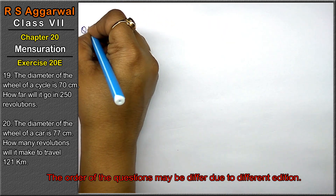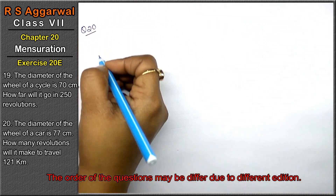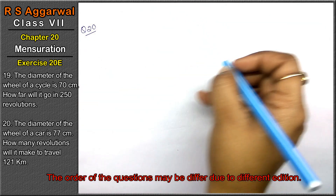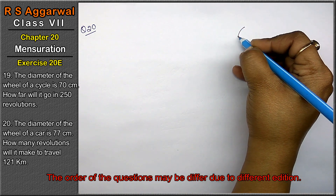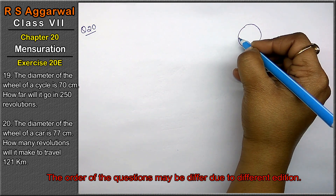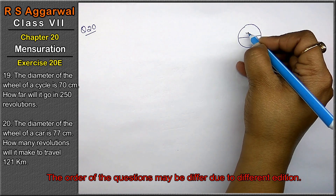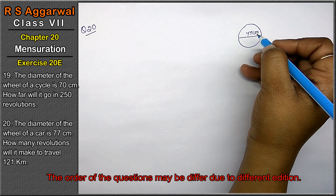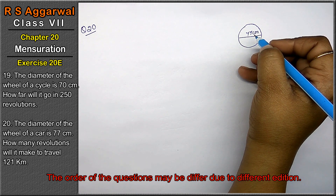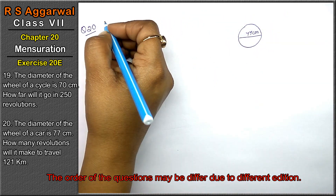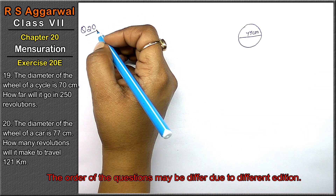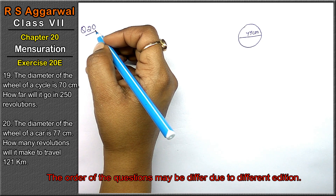Let's do question number 20 of exercise 20, that is mensuration. Question number 20 is: the diameter of a wheel of a car is 77 cm. Friends, mere video ke questions change ho sakte hain, question numbering change ho sakti hai, lekin questions are same, as well as digits are same, because of the old edition. Please check the questions while doing it. How many revolutions will it take to travel 121 km?